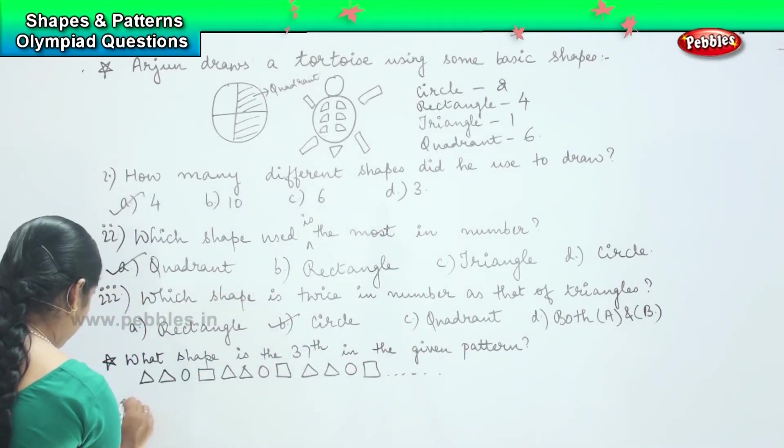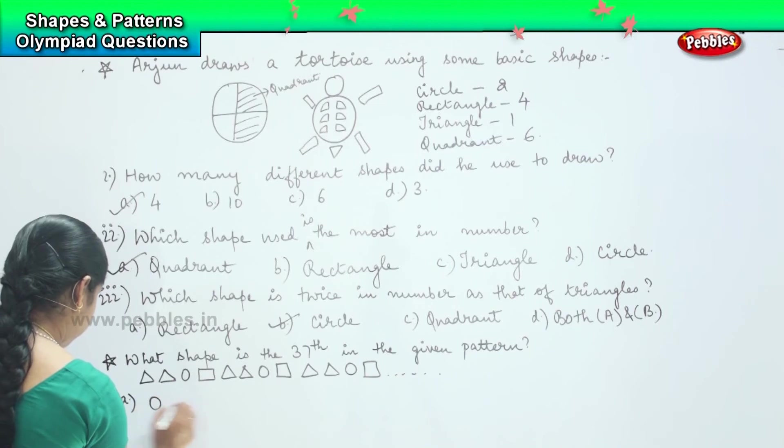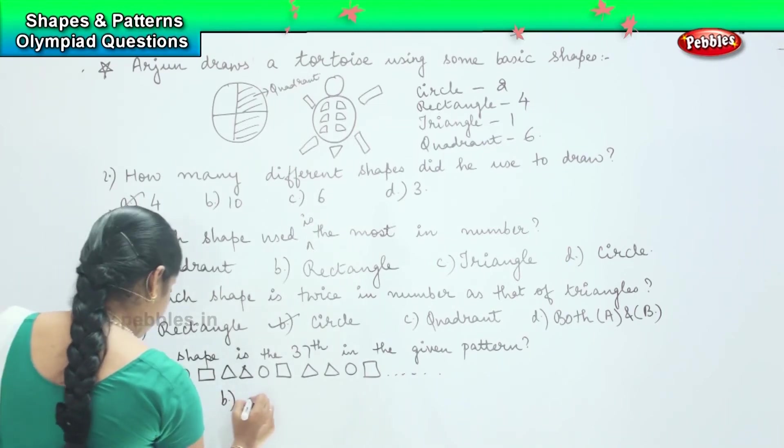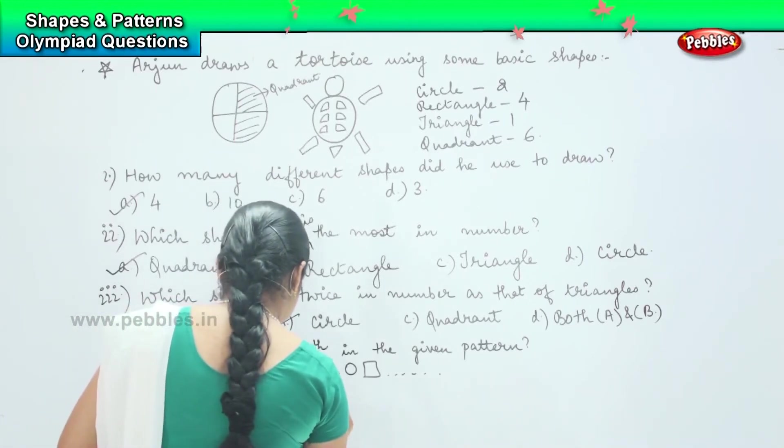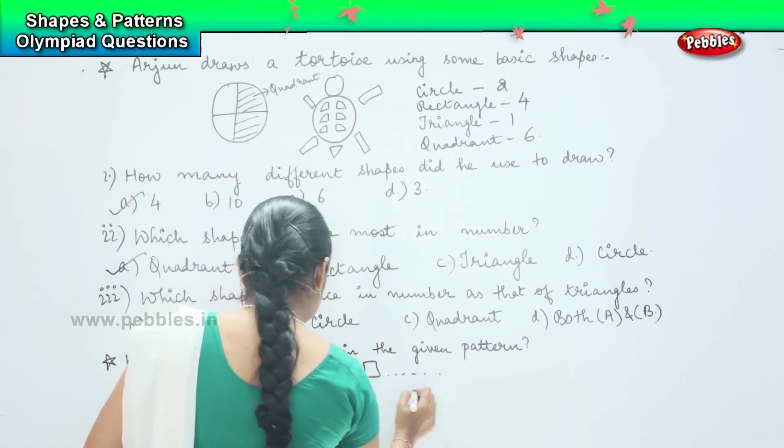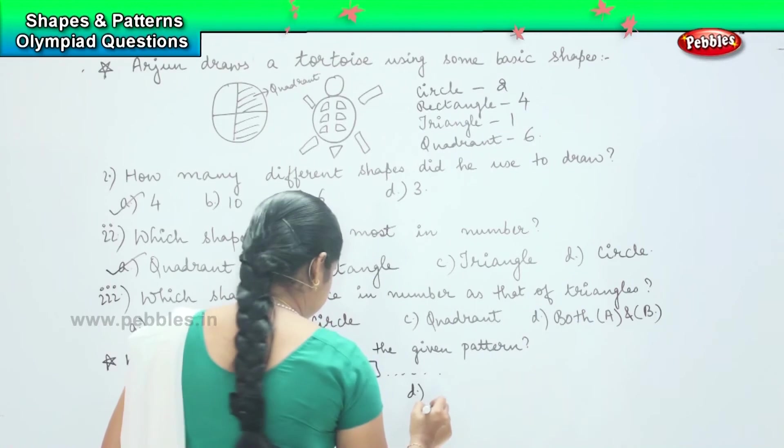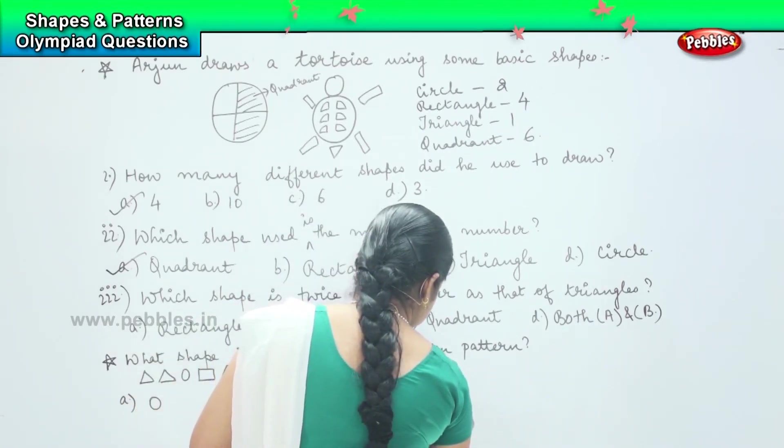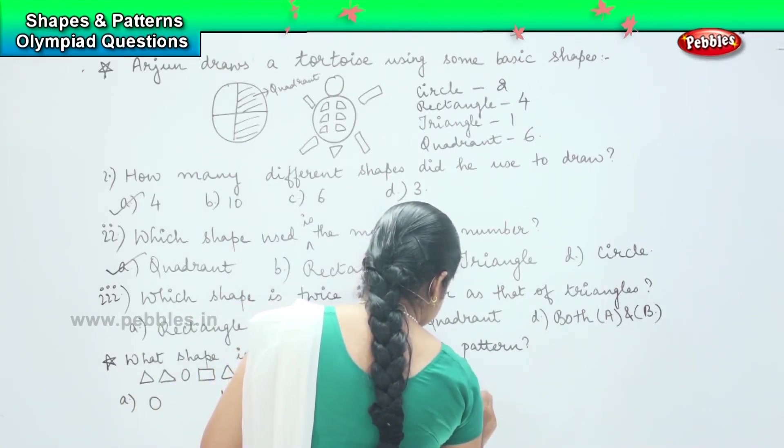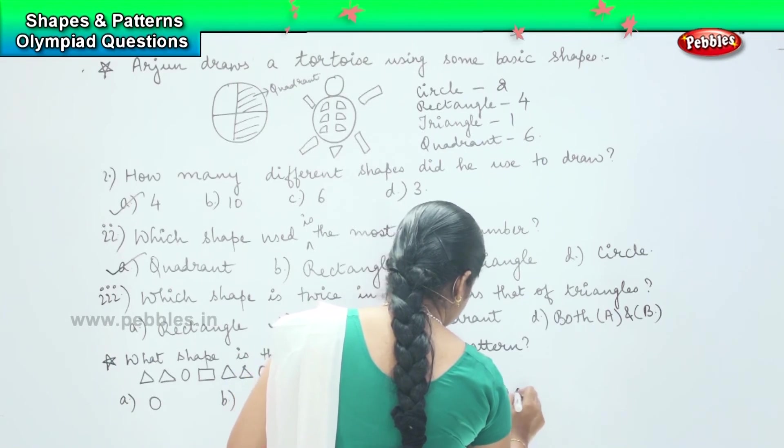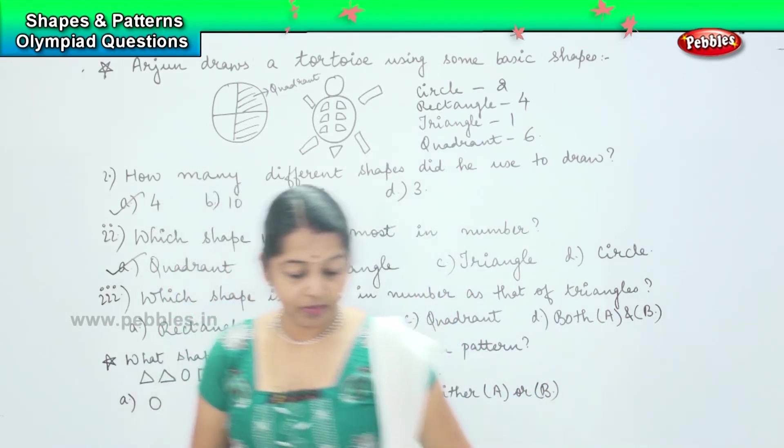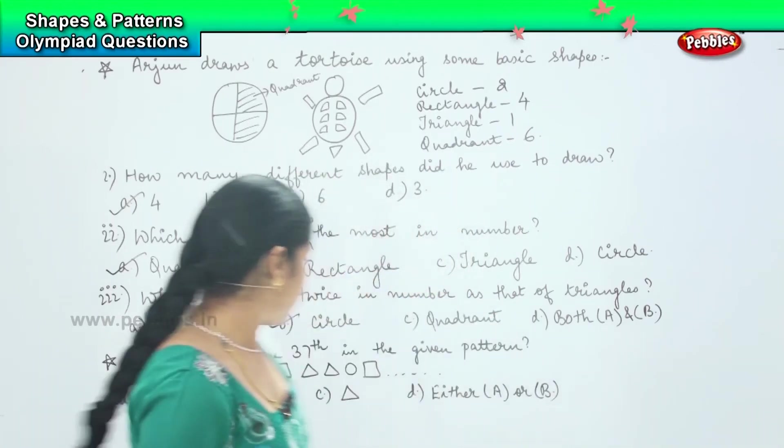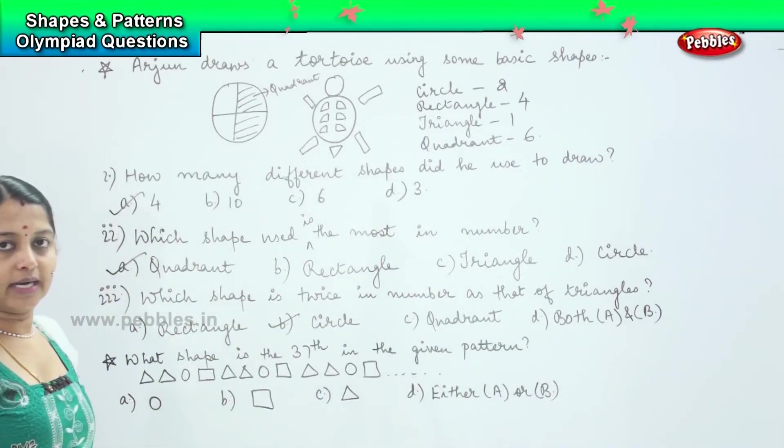So your options are A) circle, B) square, C) triangle, and D) either A or B. So now, this is the pattern that is followed here.